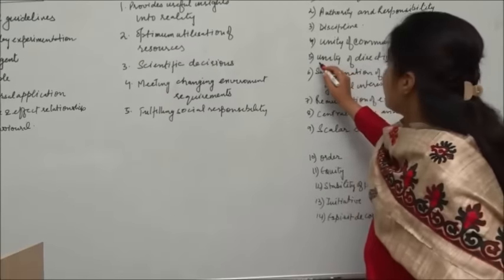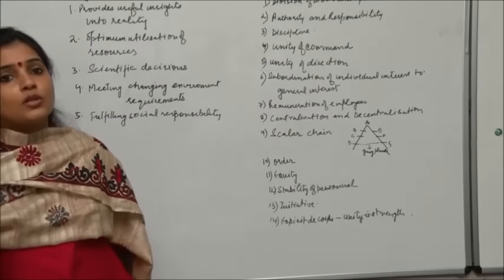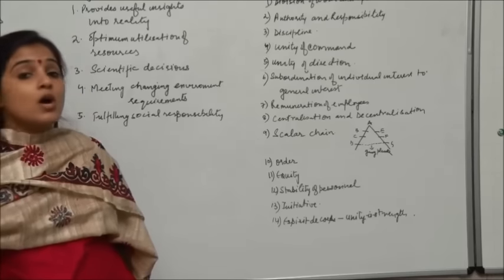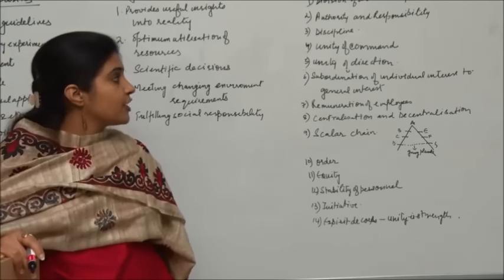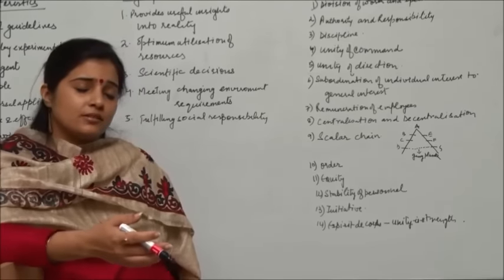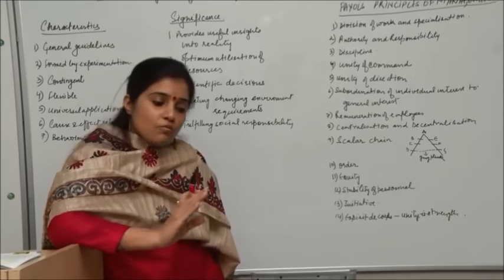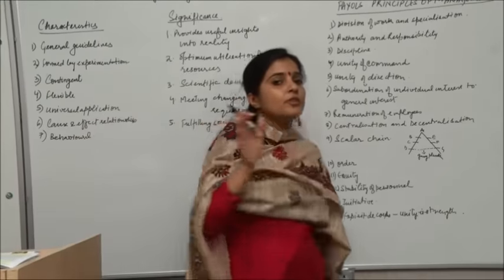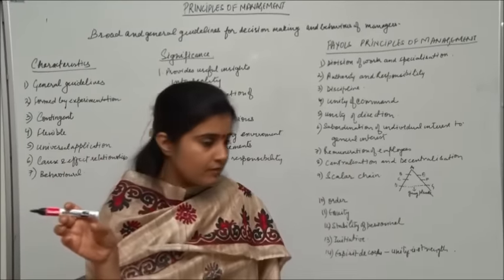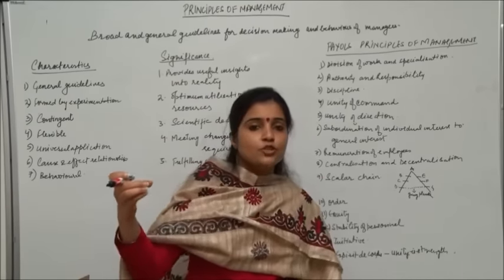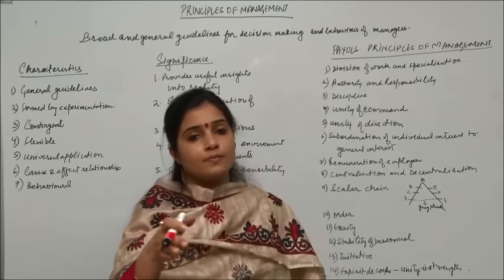Then comes the principle of unity of direction. This principle states that all the units of an organization should be working in the same direction — that is, towards the accomplishment of organizational goals. For example, if a company is manufacturing motorcycles and cars, these two products should be taken up as two different units having their own goals and objectives, but both units should be moving in the same direction towards the accomplishment of the goals of the organization as a whole.